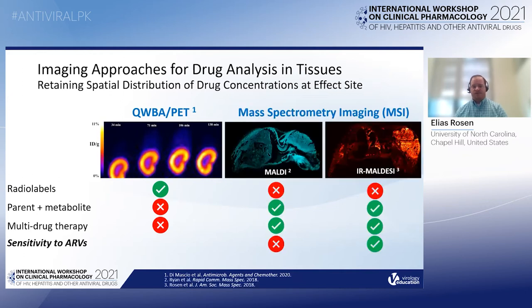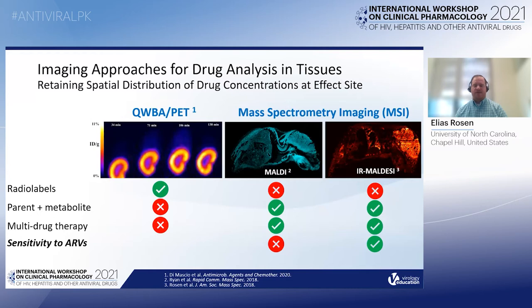Mass spectrometry imaging, or MSI, is an alternative approach wherein chemical information is captured across a tissue section without the need for any labeling or tagging, and a variety of information is captured that can include multiple drugs and their metabolites. The most common approach is MALDI; however, it requires application of an organic matrix to the sample that complicates assessment of multiple small molecule targets and makes quantification challenging, and its sensitivity to a wide variety of antiretrovirals is not high.